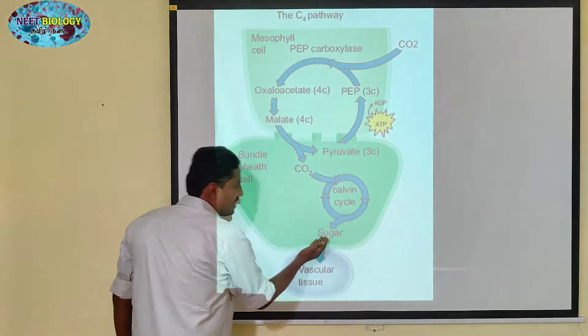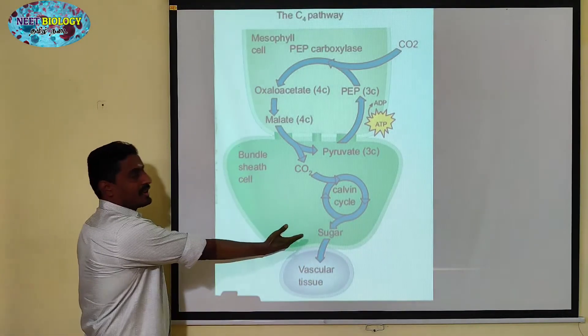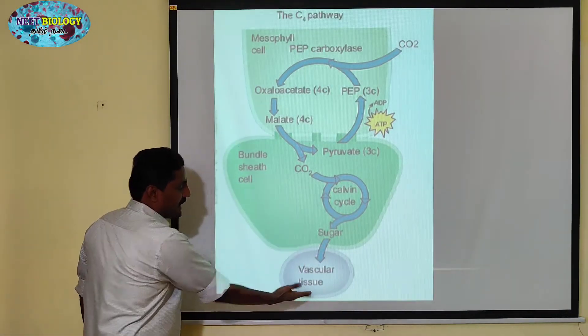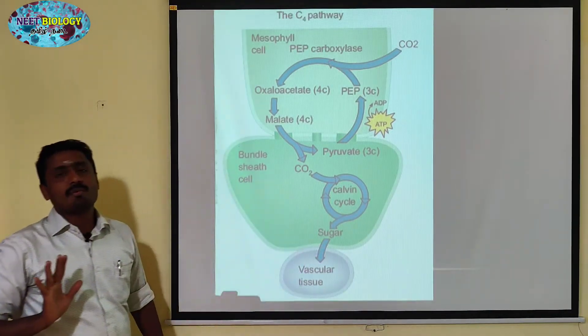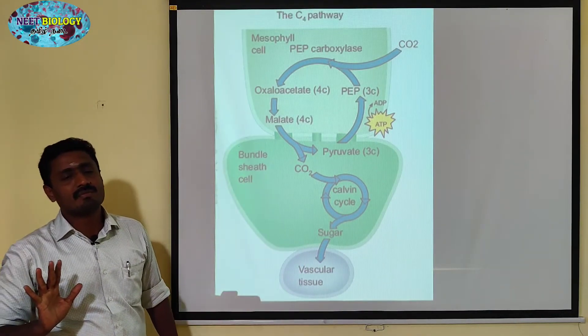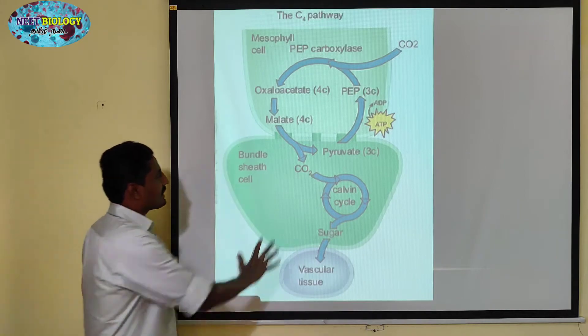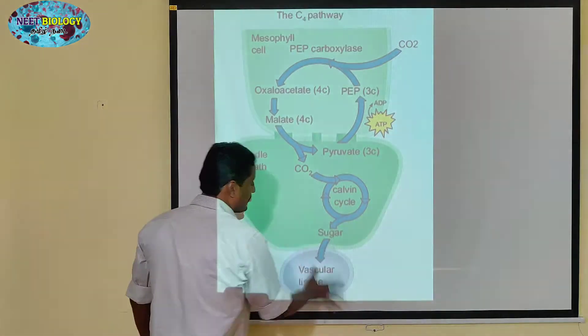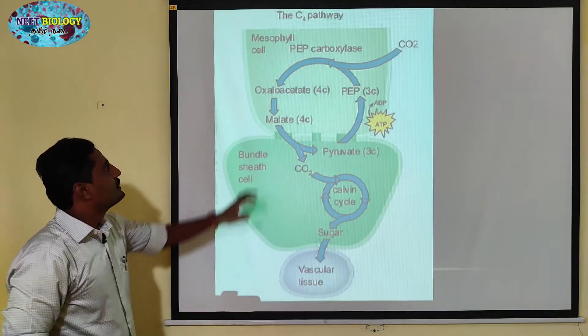When you start the Calvin cycle, carbohydrates are produced through the phloem flow.